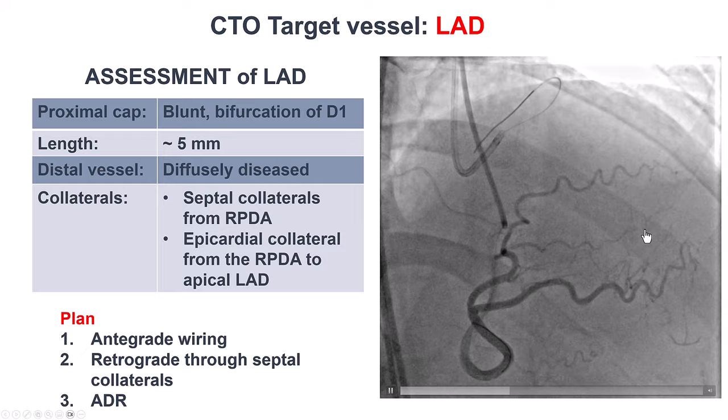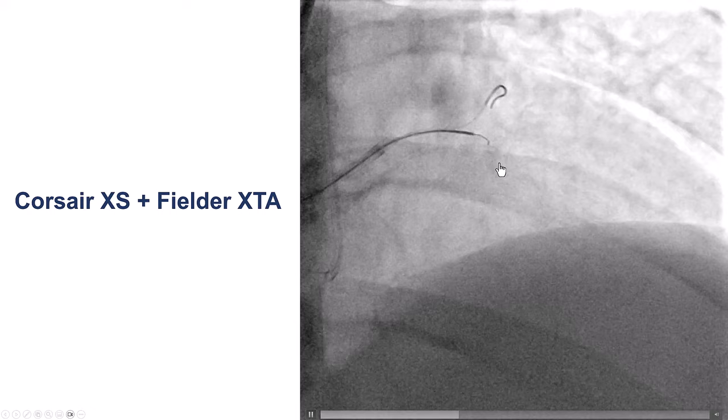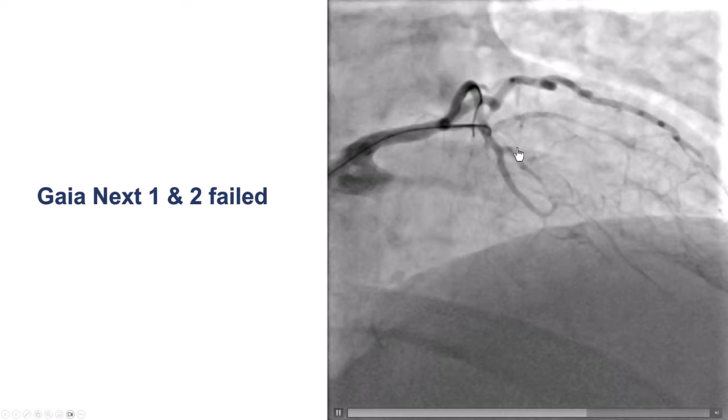We tried antegrade wires, starting with a Fielder XTA, but the wire kept going into small branches located at the proximal cap. We switched to a stiffer guidewire, but once again, there was a network of branches, and the wire kept going into those branches instead of advancing into the distal cap.